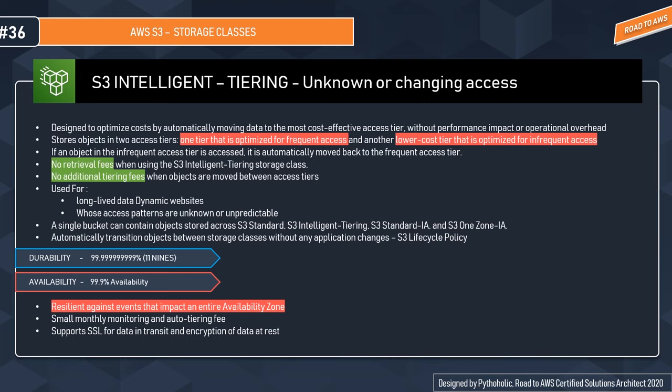If an object in the infrequent access tier is accessed, it automatically moves back to the frequently accessed tier. There are no retrieval fees and no additional tiering fees when objects move between access tiers. It is mostly used for long-lived data like dynamic websites whose access patterns are unknown or unpredictable.